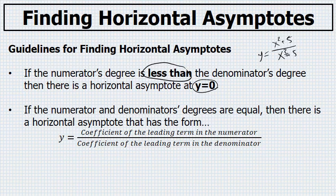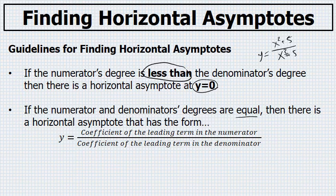Second, if the degree of the numerator and the denominator are the same — if the highest power on the variable in the top and the bottom are equal — then there is a horizontal asymptote and it takes the form y equals the coefficient of the leading term in the numerator over the coefficient of the leading term in the denominator.